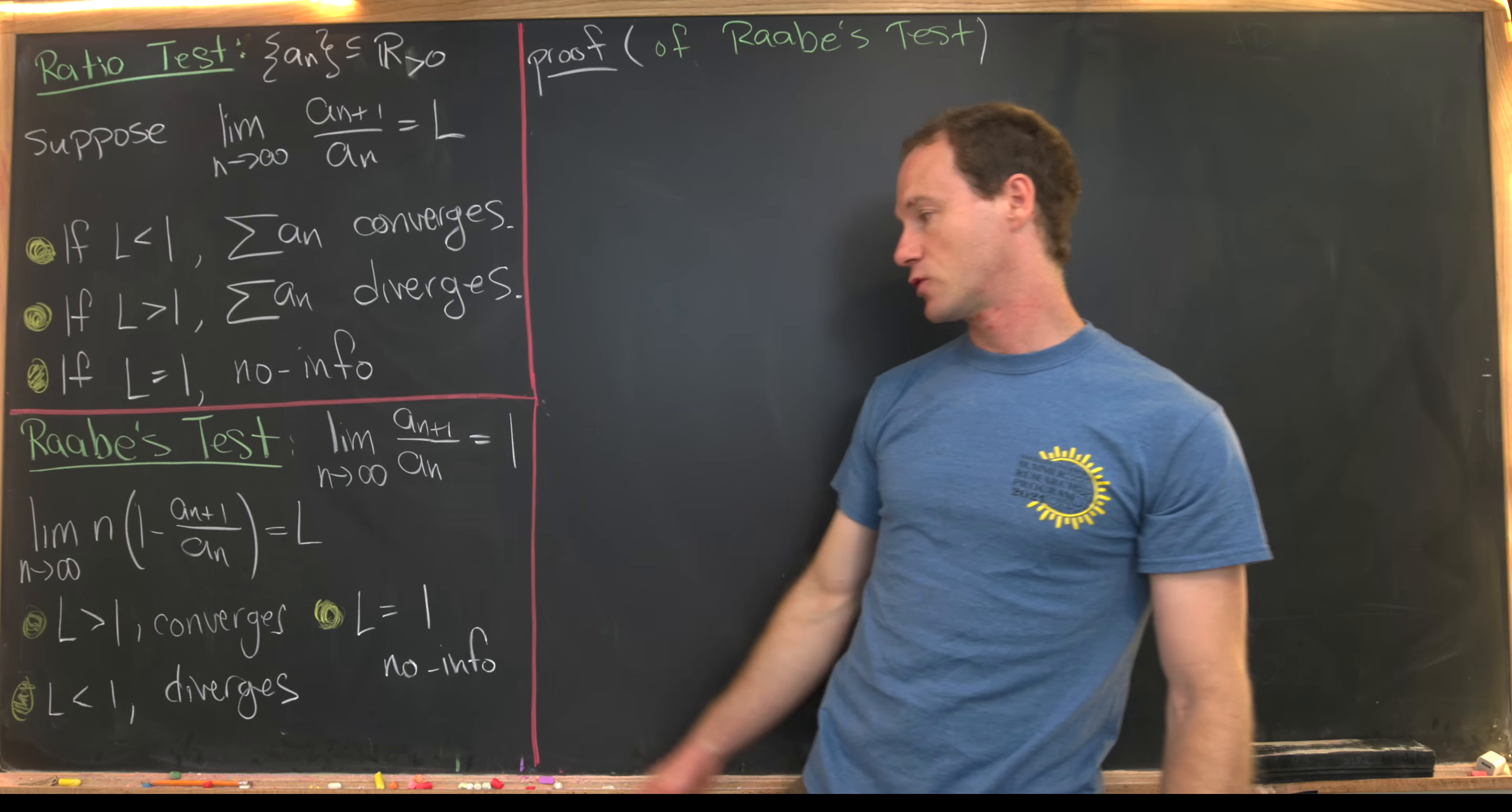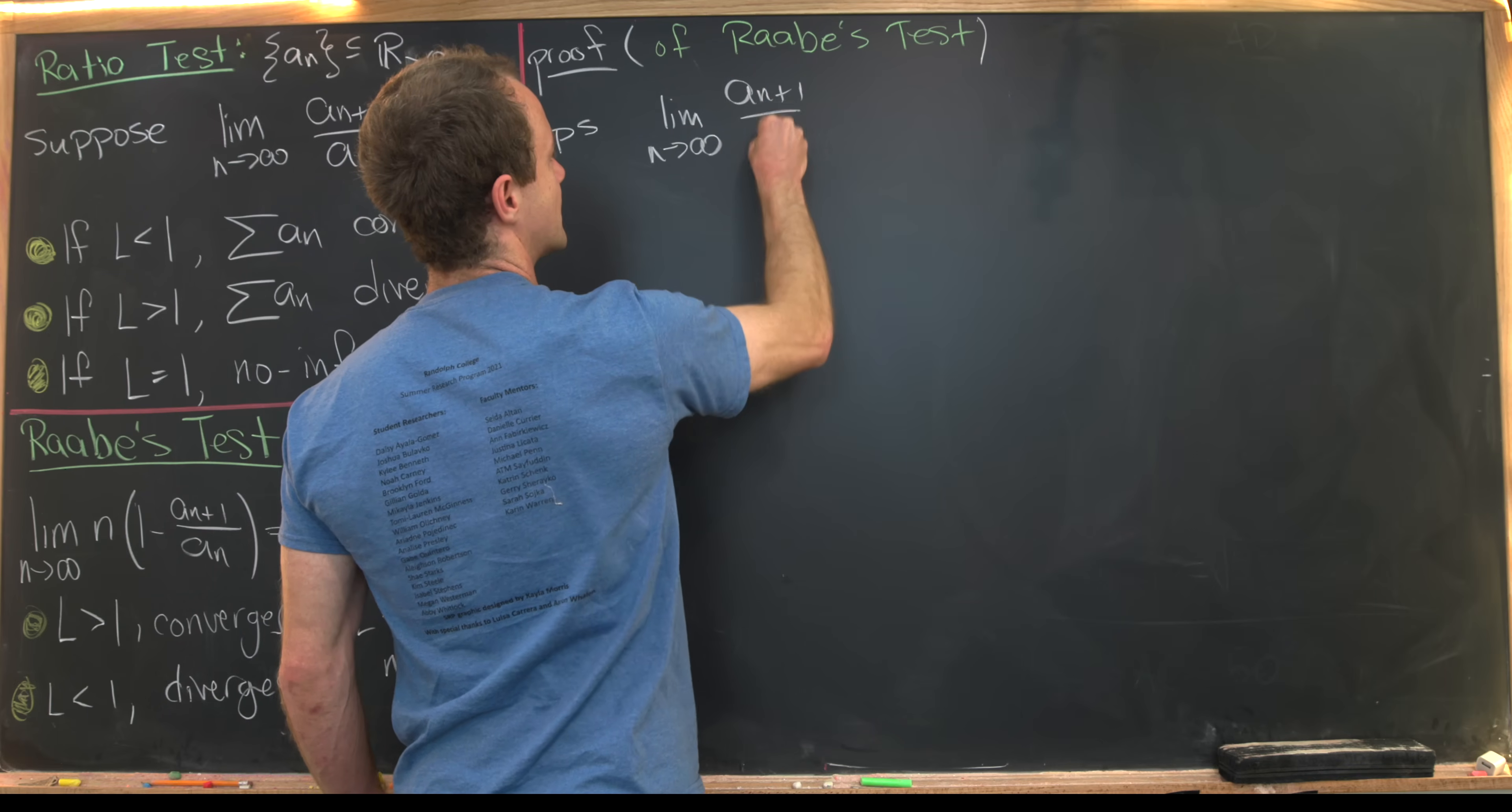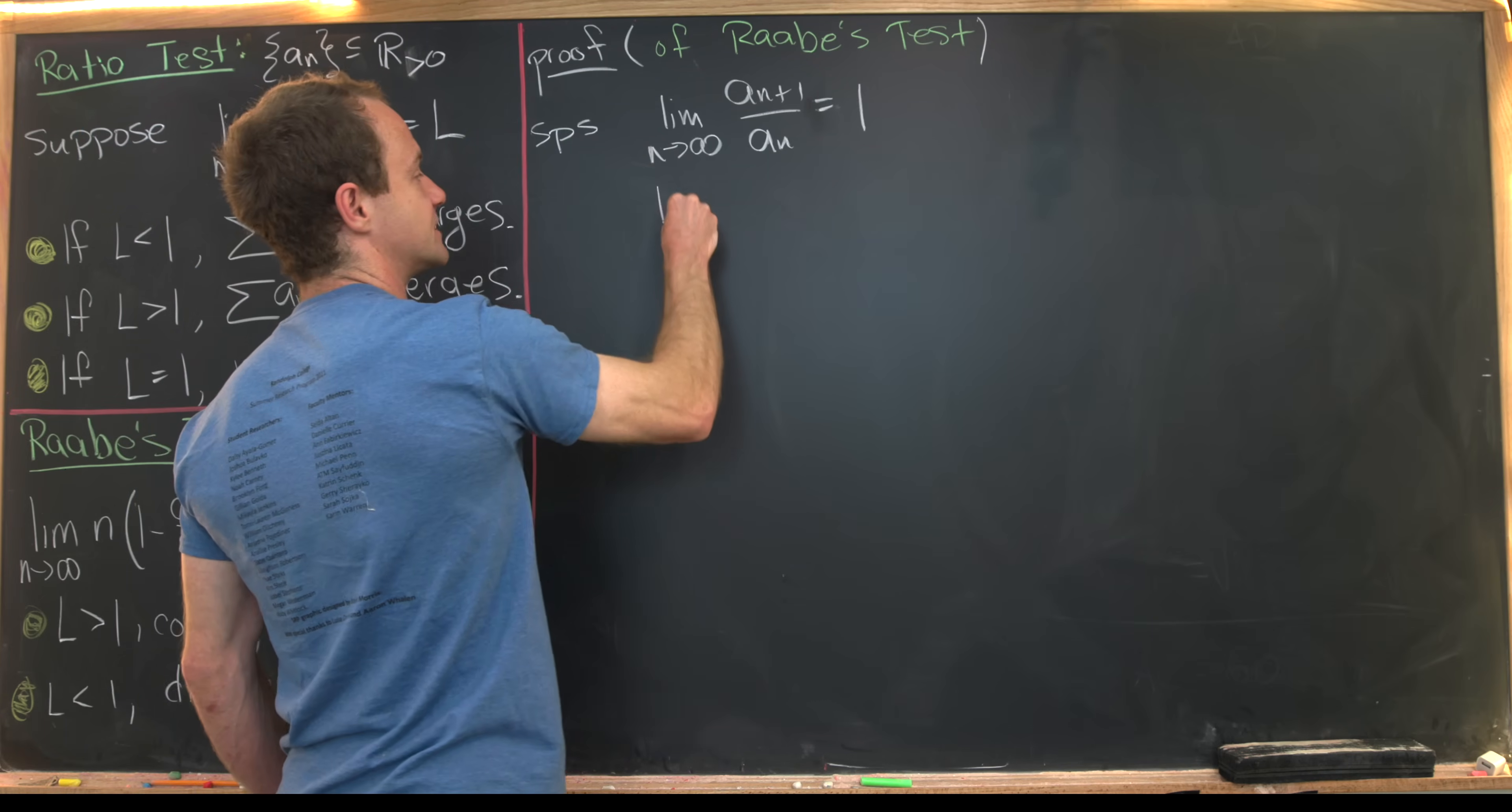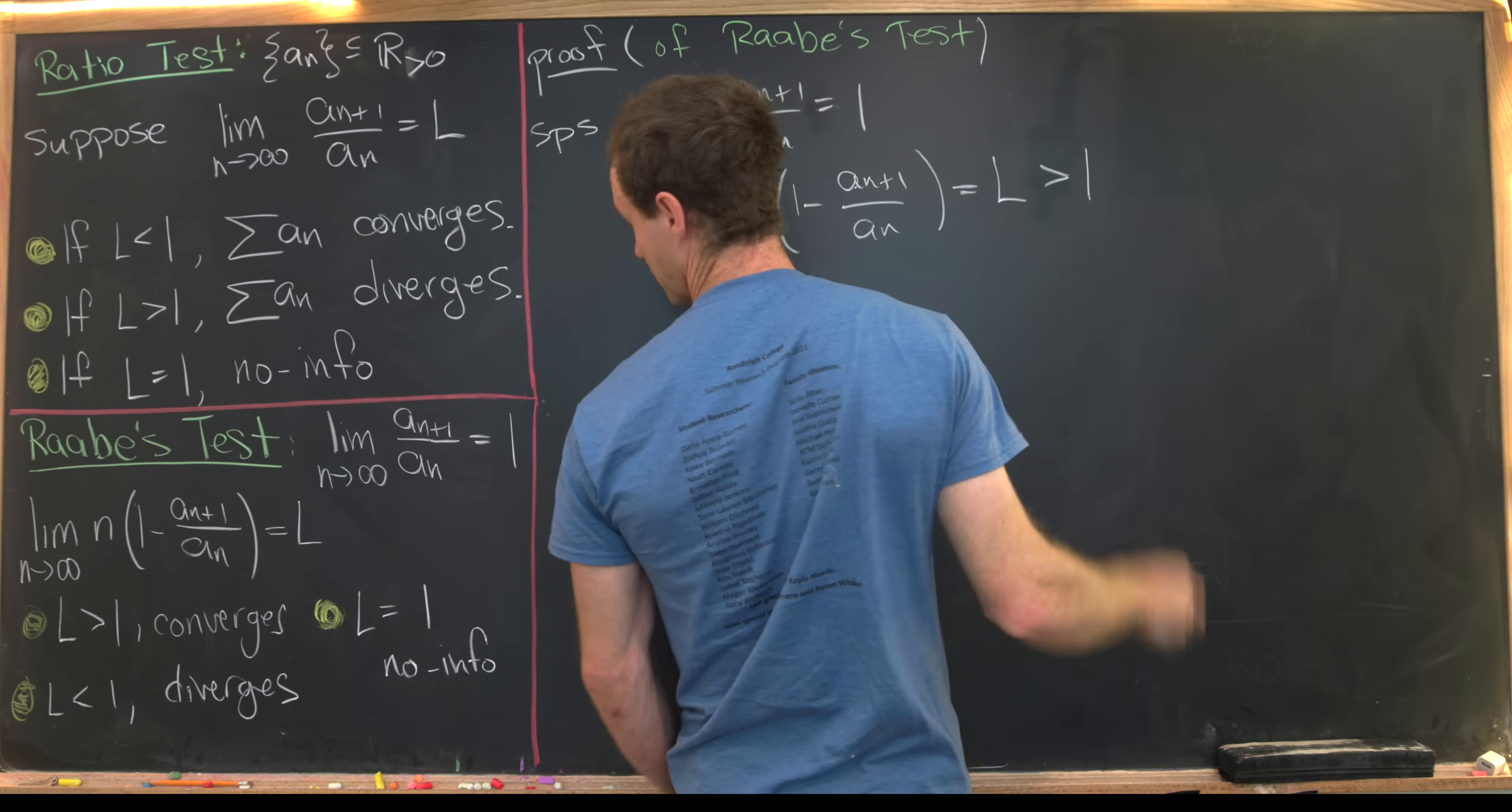So let's sketch a proof for the convergence condition of this test, and then we'll look at an example. We want to suppose two things. Let's first suppose that the limit as n goes to infinity of a_{n+1}/a_n equals 1. We have to have that in order to use this test in the first place. And then we'll also assume that the limit as n goes to infinity of n(1 - a_{n+1}/a_n) equals L, which is strictly bigger than 1.